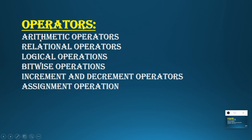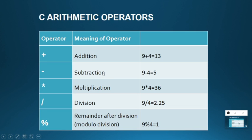Coming to the last token: operators. There are many operators — arithmetic, relational, logical, bitwise, increment and decrement, and assignment operators. Arithmetic operators are used to add, subtract, multiply, divide, or find the remainder using modulo. For example, 9 % 4 gives the remainder. The difference between division and modulo is that modulo gives the remainder, while division gives the quotient.